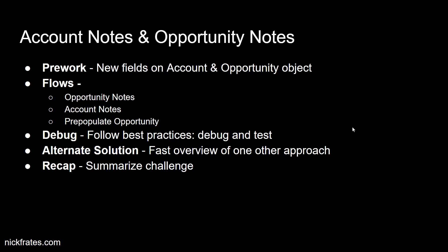That opportunity flow is going to use loops, which is why we covered loops already — just so we had some more experience before diving in. The second flow will be on accounts and will be responsible for updating the account notes for all the opportunities. The final flow also runs on the opportunity, but is responsible for pre-populating the opportunity when it's first created with all the information Pedro requested. Once we build out our flows, we'll do some debugging and follow best practices. I'll also show you an alternate solution to one of the flows, because not everything in Salesforce can or should be solved with a flow.